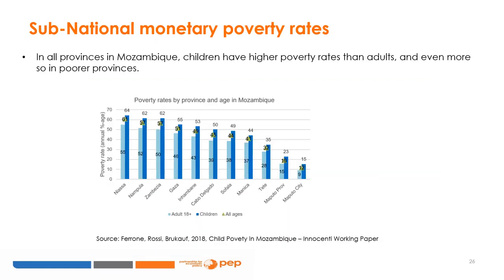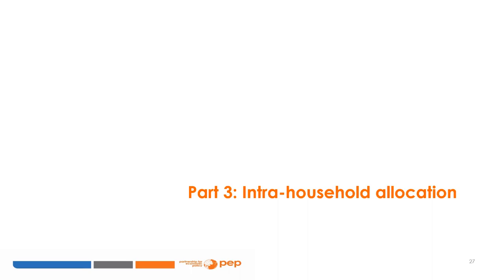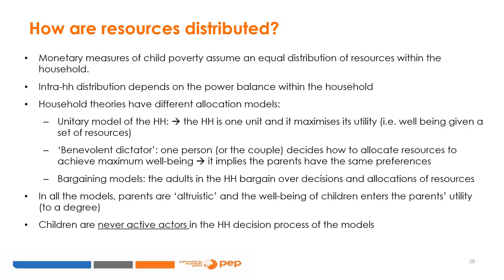What about subnational levels? In this example from Mozambique, we see that in all provinces, from the poorest to the less poor, children are at a higher risk of poverty. Poverty is calculated at the household level. However, resources are not necessarily distributed equally within the family. Monetary measures of child poverty assume, by construction, that resources are equally distributed within the household. However, how they are distributed in practice depends on various factors, including the balance of power within the household.